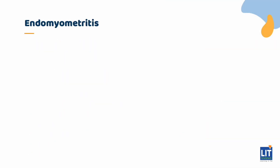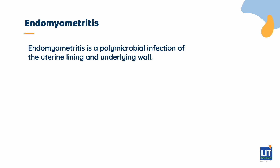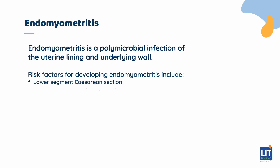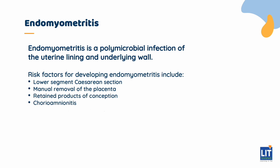The first postpartum infection we will discuss is endomyometritis. Endomyometritis is a polymicrobial infection of the uterine lining and underlying wall. Risk factors for developing endomyometritis include lower segment caesarean section, manual removal of the placenta, retained products of conception, chorioamnionitis, and premature rupture of membranes.